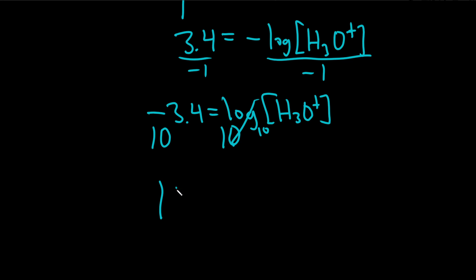So you get 10 to the negative 3.4 equals our hydronium ion concentration.